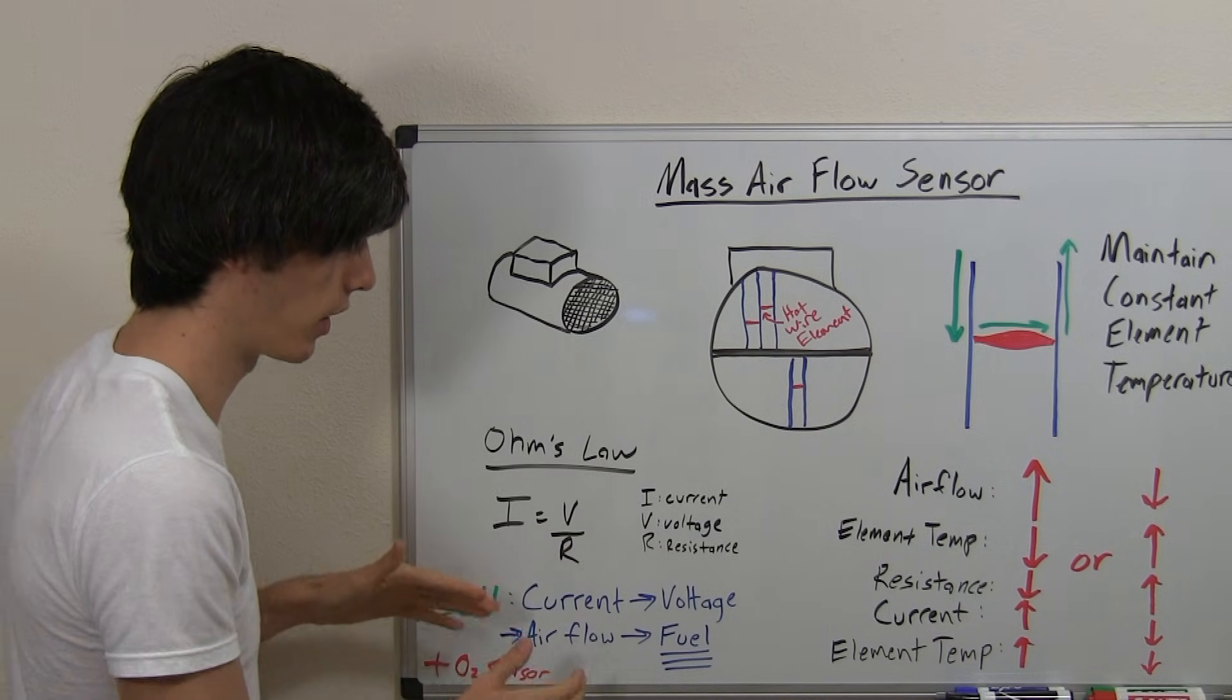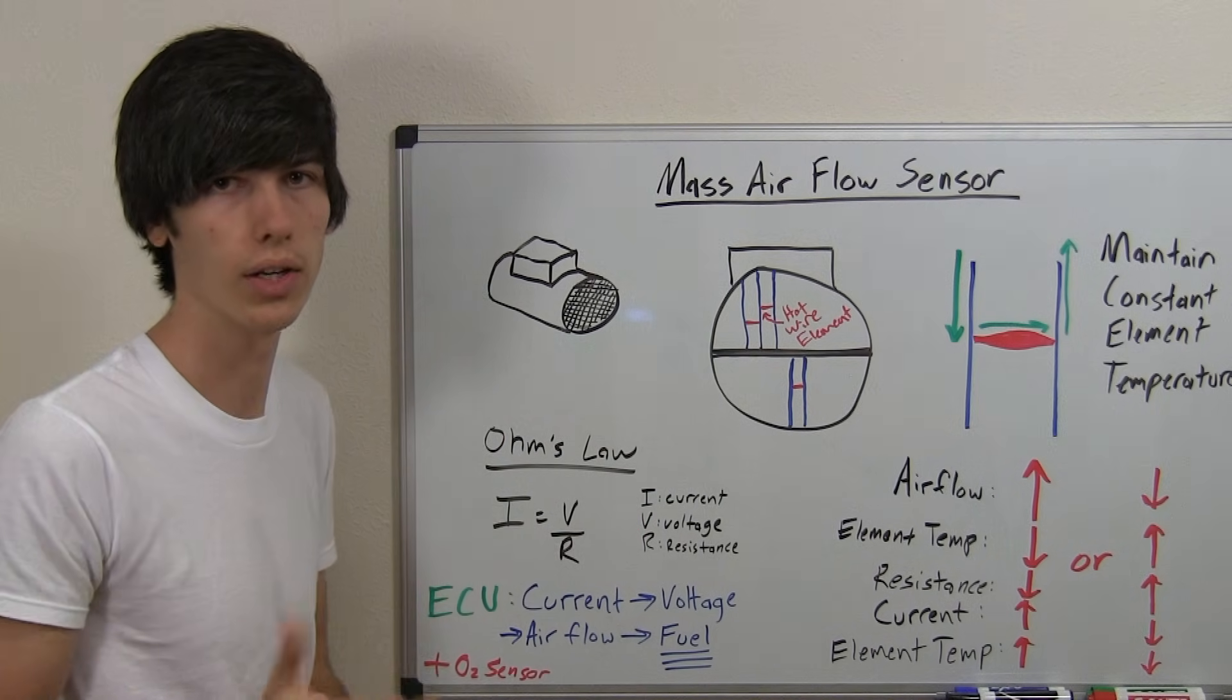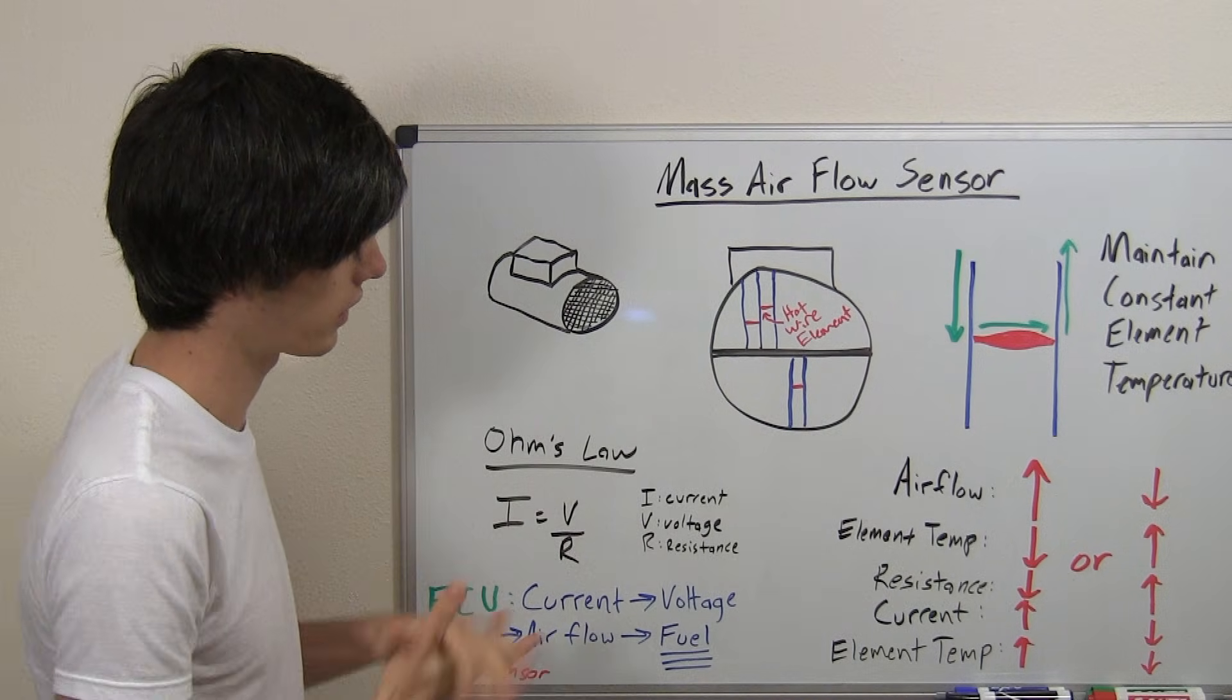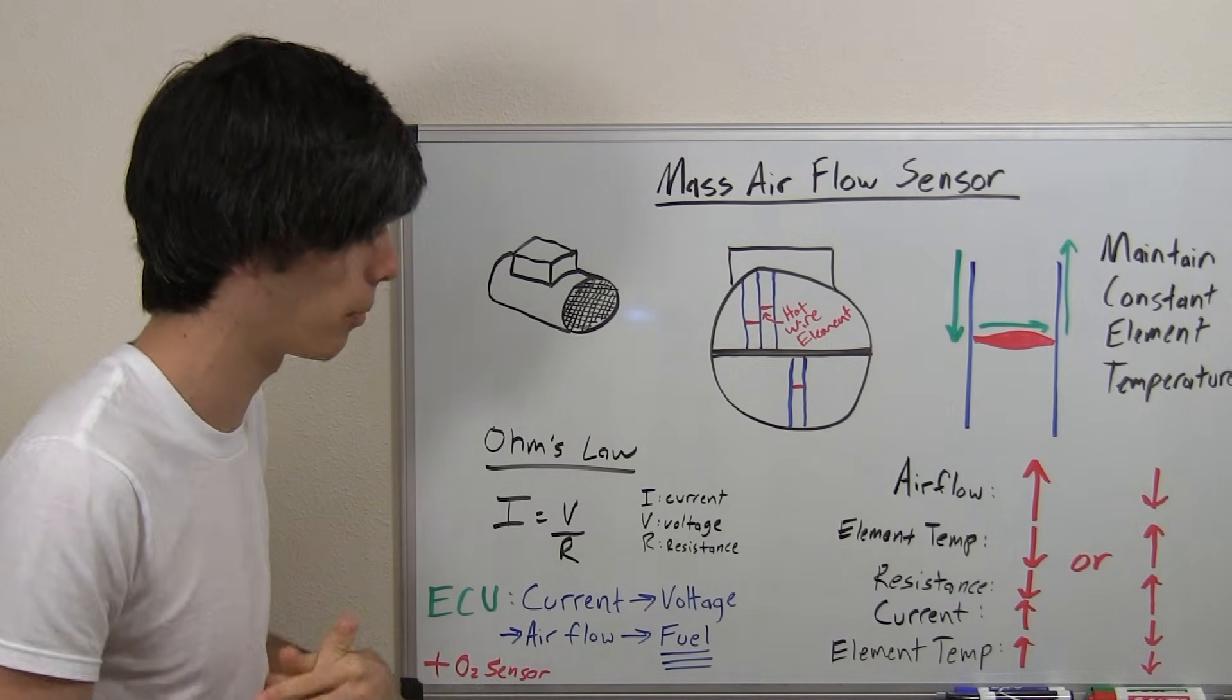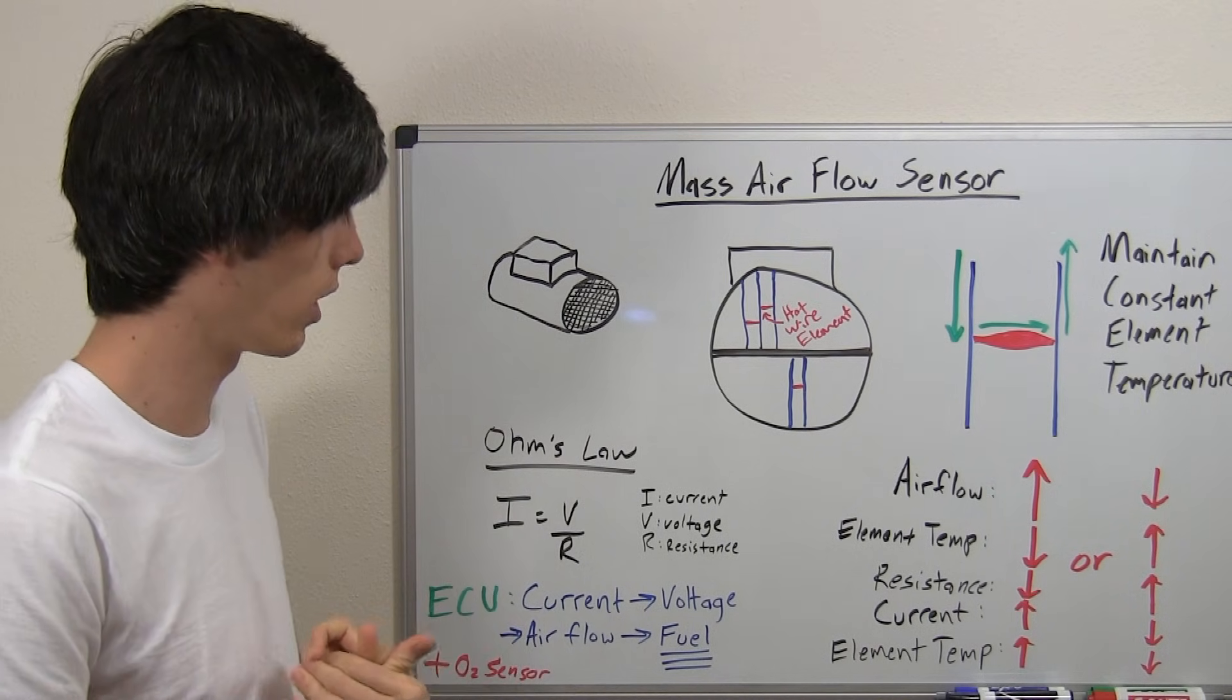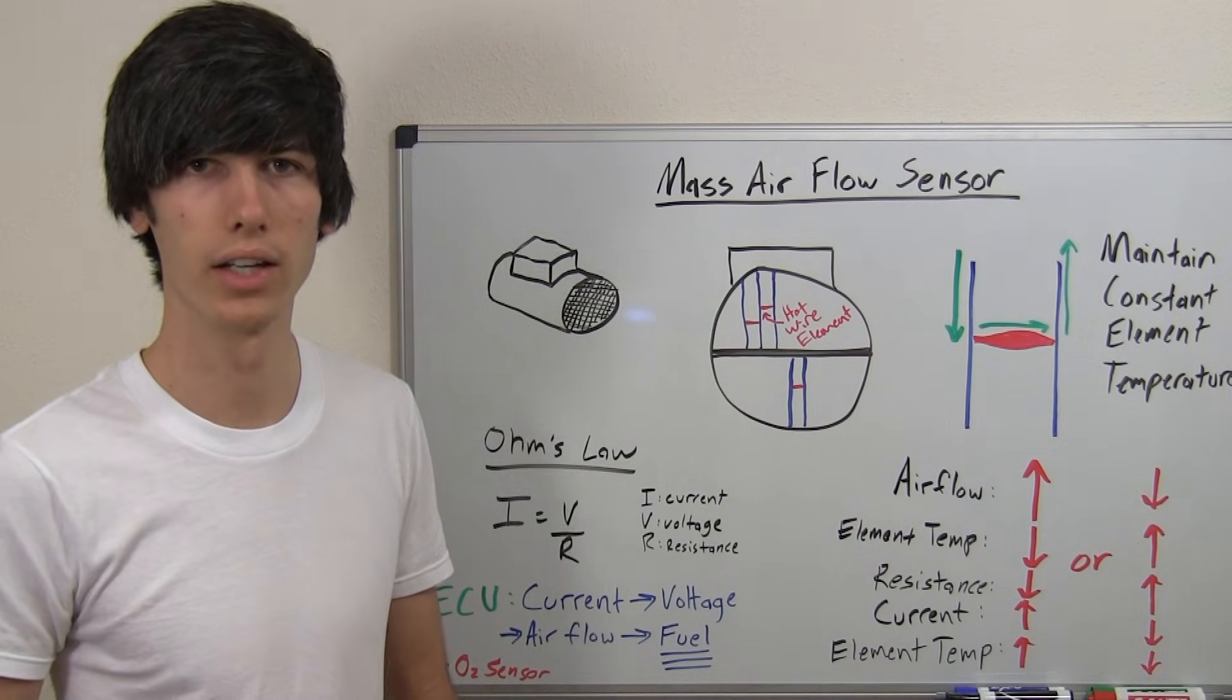Since it knows there's a difference in airflow, it can send more or less fuel. In combination with the O2 sensor, which I'll explain in a later video, it can balance it out and get the perfect air fuel ratio that your engine wants. It'll sometimes vary depending on how much throttle you're on and other sensors, but one of the most important ones is the mass airflow sensor so you know how much air is going into your engine.